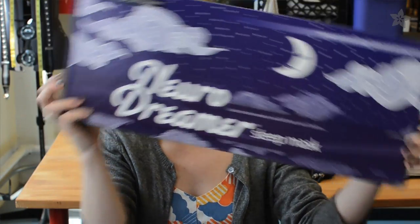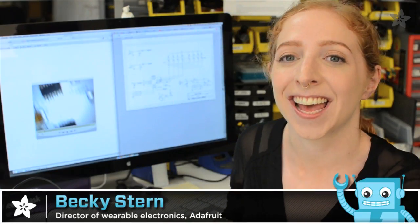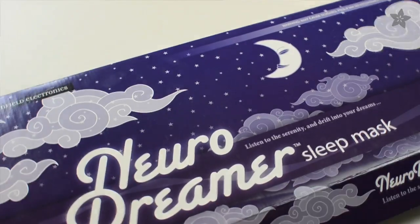We're going to do another wearable teardown today, everybody. It's the NeuroDreamer Sleep Mask from Cornfield Electronics, and it's designed to help you fall asleep faster and rest easier.